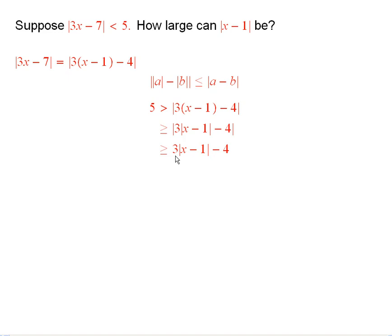And then that is bigger than or equal to just this thing here. Because the absolute value of anything is always at least as big as the anything.